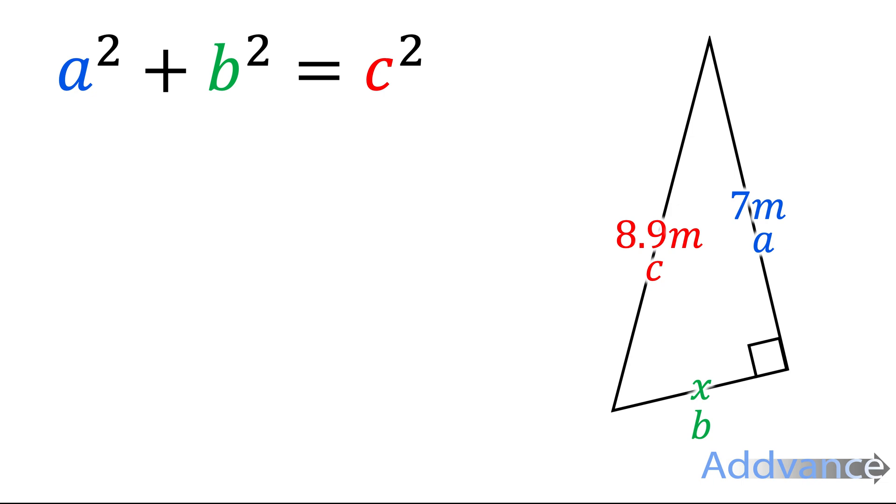And this time we are given C, and we want to find one of the other sides. This makes it a little bit more complicated, and you will have to do a bit of rearranging here. Let's start by putting the numbers in. A is 7 and C is 8.9, and we can fill in the X as B.